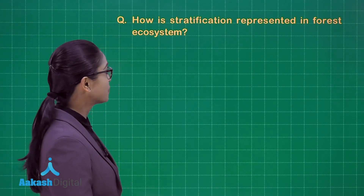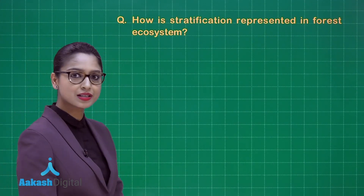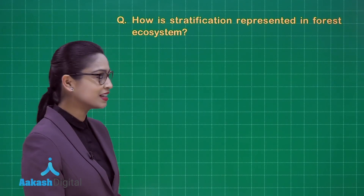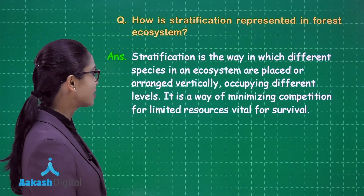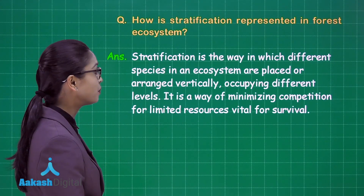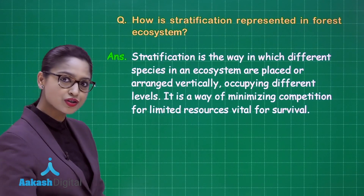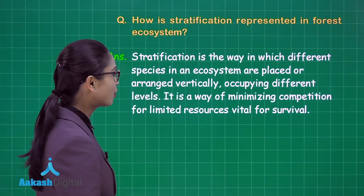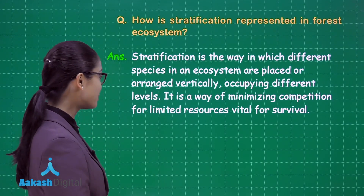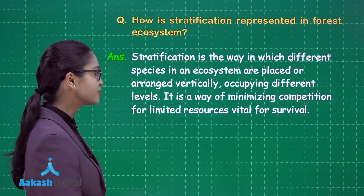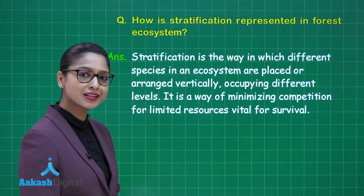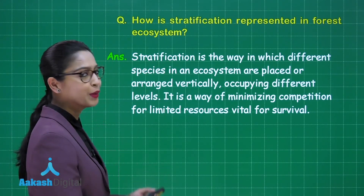How is stratification represented in a forest ecosystem? We just discussed the four strata of a forest. Stratification is the way in which different species in an ecosystem are placed or arranged vertically, occupying different levels. It is a way of minimizing competition for limited resources, vital for survival.